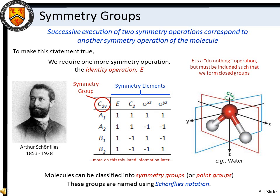Group theory tells us that successive execution of two symmetry operations must correspond to another symmetry operation for the molecule. We therefore include a fifth do-nothing, or identity operation, denoted E, such that we form closed groups.